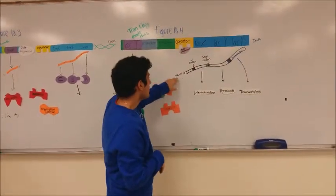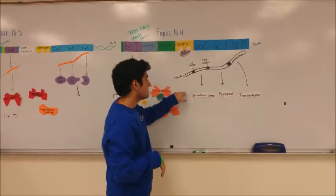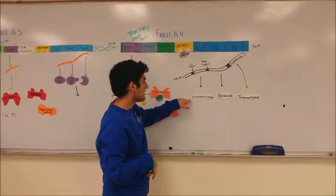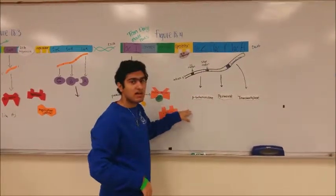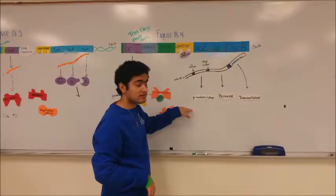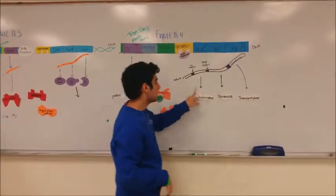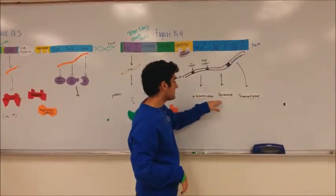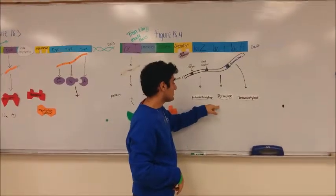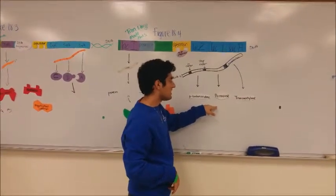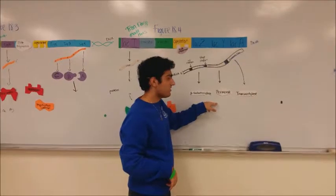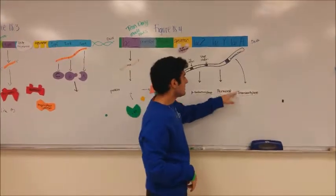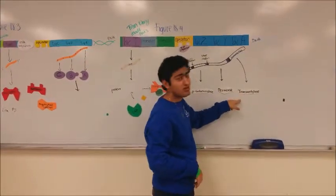After this transcription, mRNA is created which then codes for enzymes. β-galactosidase hydrolyzes lactose into galactose and glucose. Permease is another one; its function is that it allows lactose into the cell membrane. The function of transacetylase is still unknown.